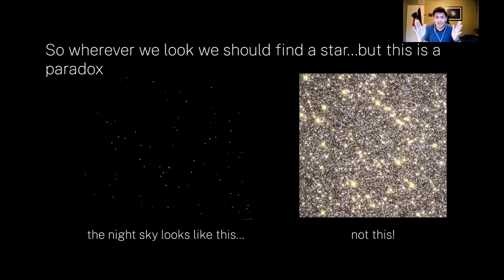Obviously, this isn't what the night sky looks like. We do not see a star in every single direction. Even with our best telescopes, it's just not the case. And this is Olber's Paradox. If there's a star in every direction, why can't we see them? Why is the night sky dark?